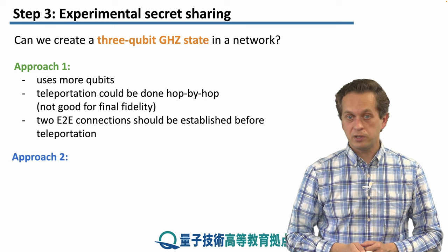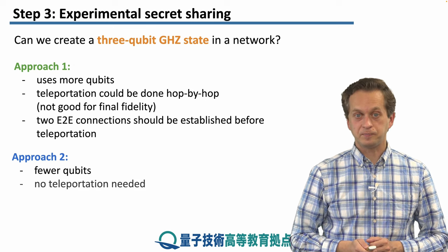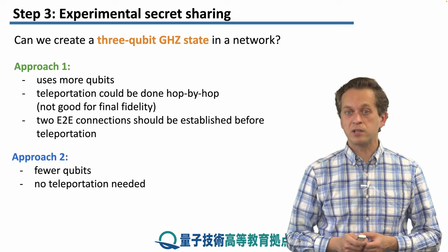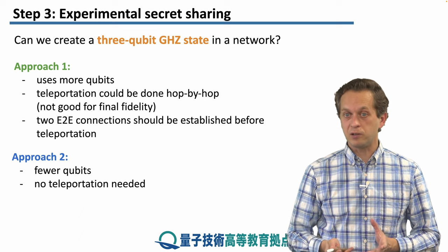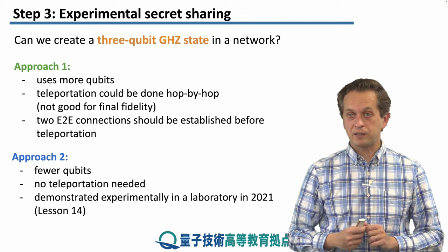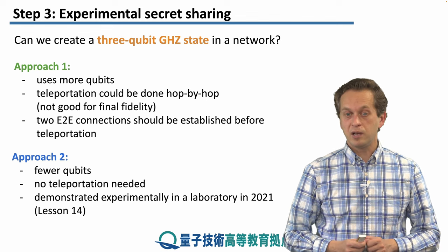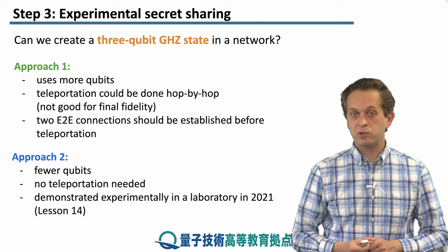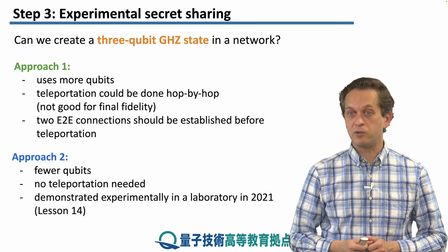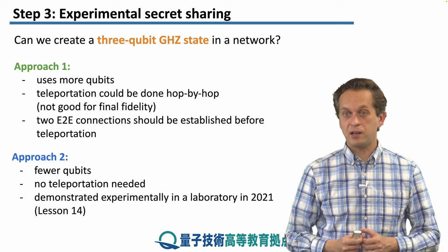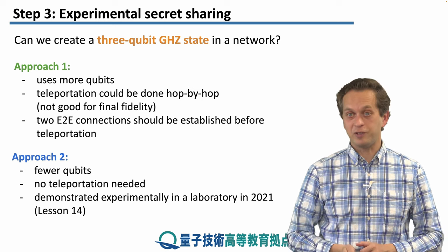Approach two, on the other hand, uses far fewer qubits and no teleportation whatsoever, making it much simpler. We will revisit this approach in lesson 14, because it was used to experimentally demonstrate in a laboratory in 2021 that you can create a GHZ state between non-neighboring nodes of a network.